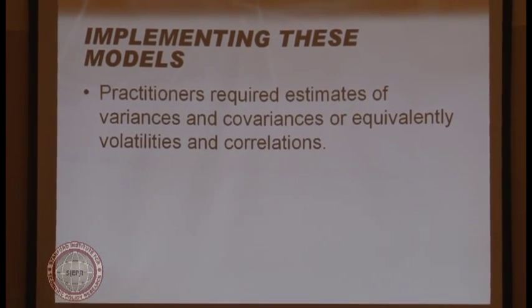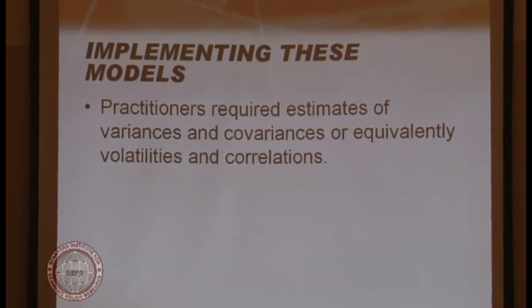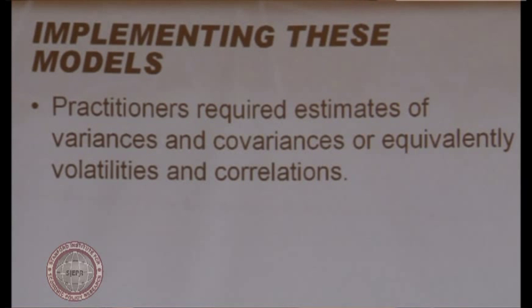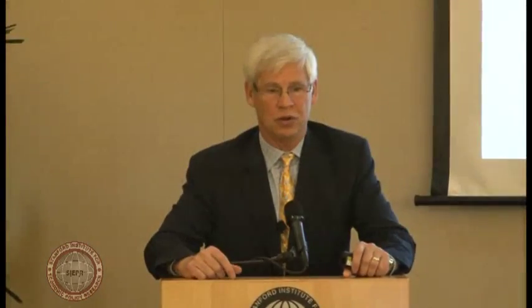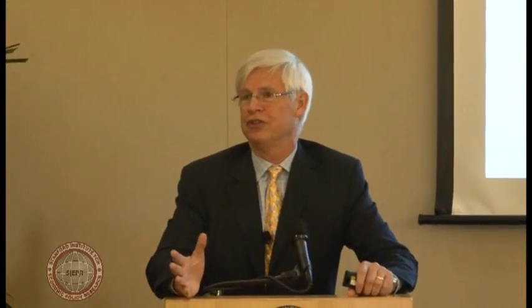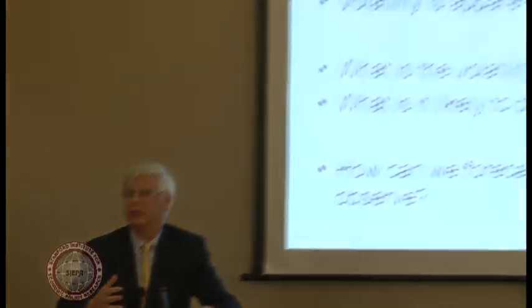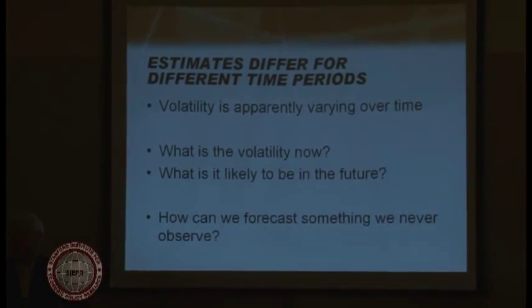When practitioners try to implement these models, they recognize — and this is probably not too surprising — that volatilities are not actually constant. They seem to change over time and have to be estimated. In business school, they tell you what the volatility is and you calculate the options price, but in reality we have to figure it out. So what we observe is that volatilities are changing over time. What we'd really like to know is what is the volatility now, or even more interestingly, what is it going to be in the future — how do we predict future volatility?